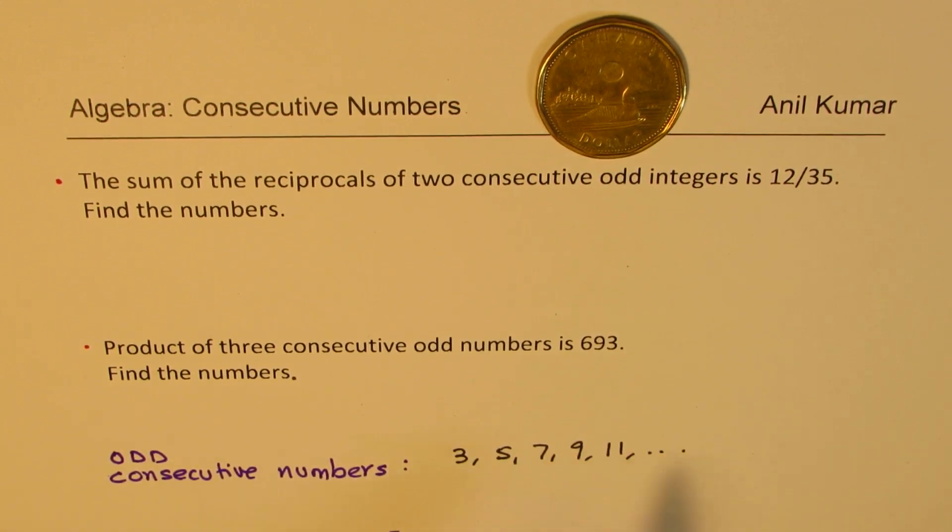So these are odd consecutive numbers. All are odd numbers and they come together one after the other. So that is how we understand consecutive numbers.